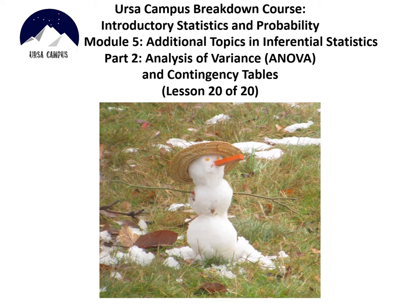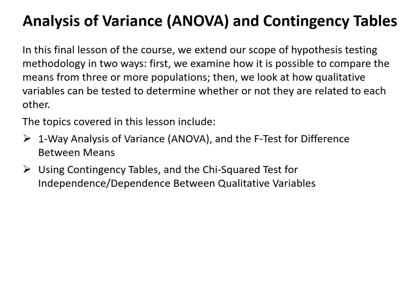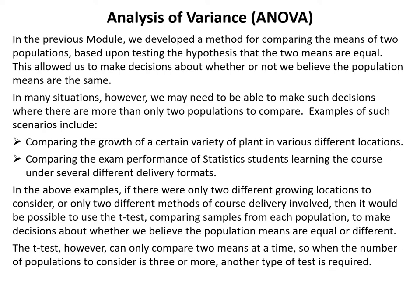In this final lesson of the course, we extend our scope of hypothesis testing methodology in two ways. First, we examine how it is possible to compare the means from three or more populations. Then we look at how qualitative variables can be tested to determine whether or not they are related to each other. Topics covered include one-way ANOVA with the F test for difference between means, and contingency tables with the chi-squared test for independence or dependence between qualitative variables.